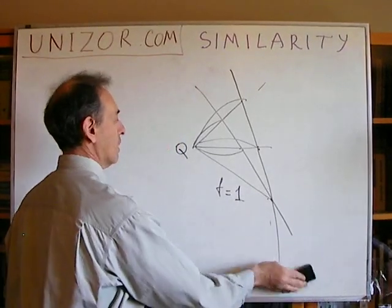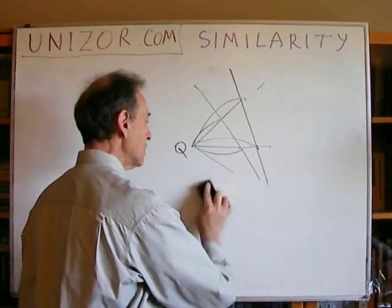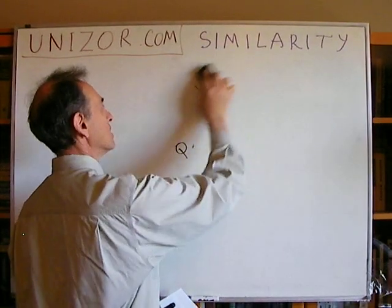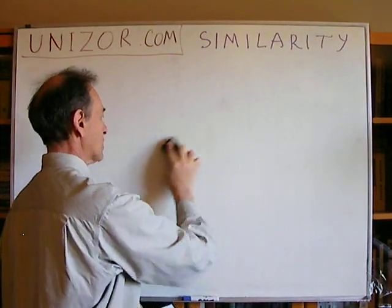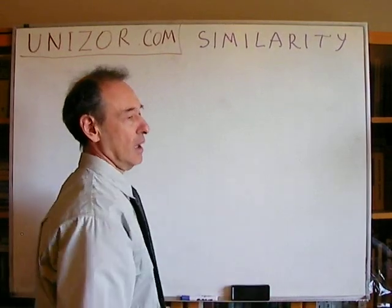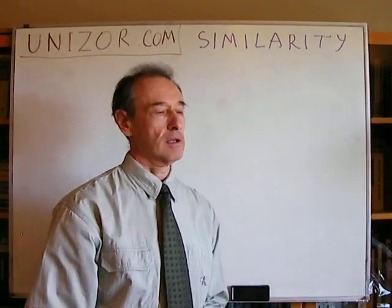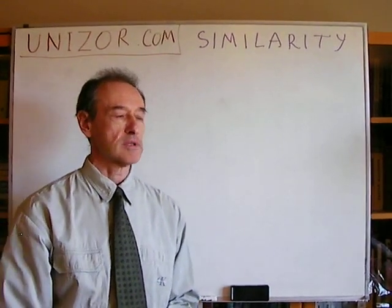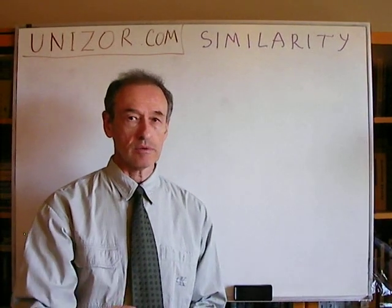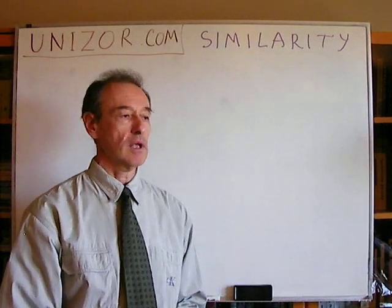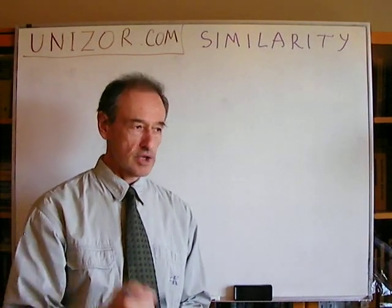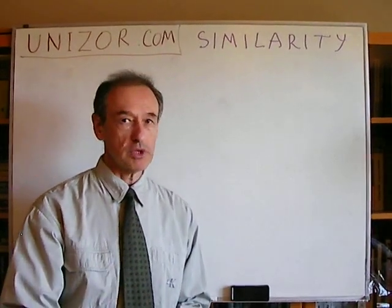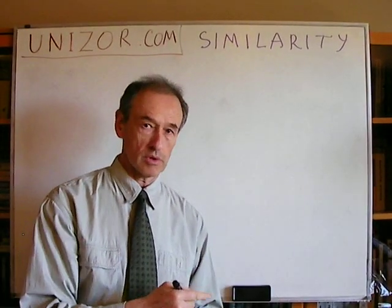So, assuming the property that scaling — or homothety, as some people call it — transforms straight lines into straight lines, if you take it as a given, then we can prove that the image would be parallel to the source.